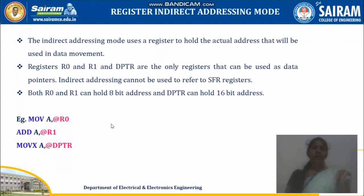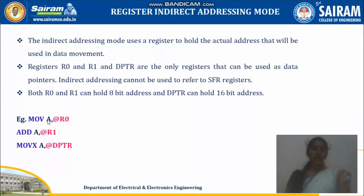Both R0 and R1 hold an 8-bit address, whereas the data pointer will hold a 16-bit address. For example, in the instruction MOV A, @R0 — suppose R0 holds the value 55H. At R0 means: at the 55th location, whatever data is available will be moved onto your accumulator. That is, the content available inside that address held by R0 will be moved onto your accumulator.